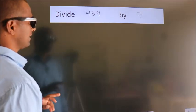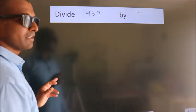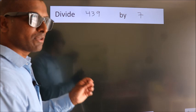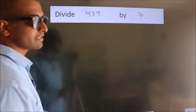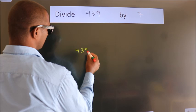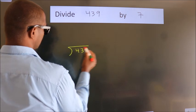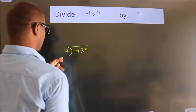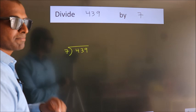Divide 439 by 7. To do this division, we should frame it in this way: 439 here, 7 here. This is your step 1.